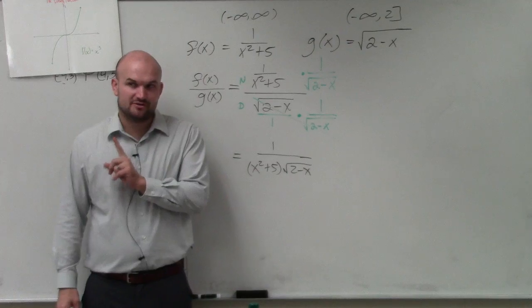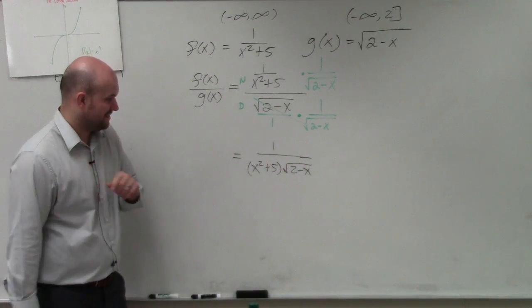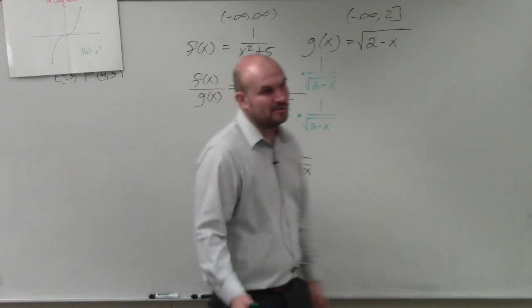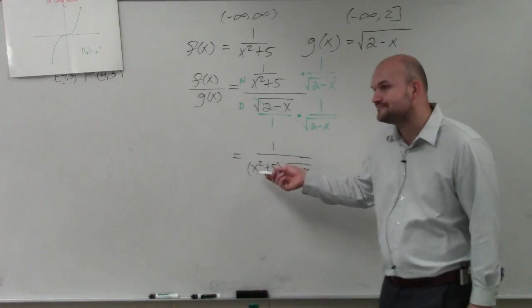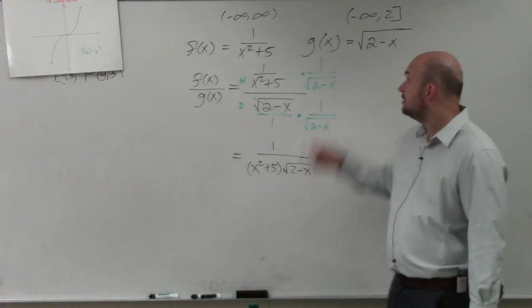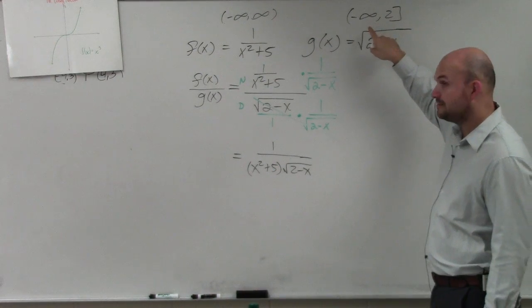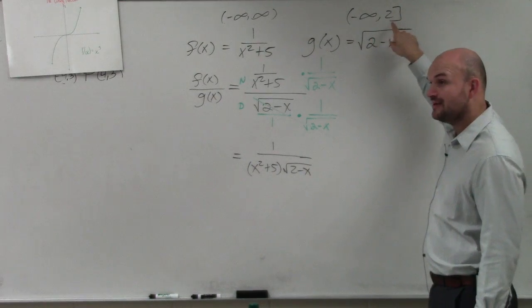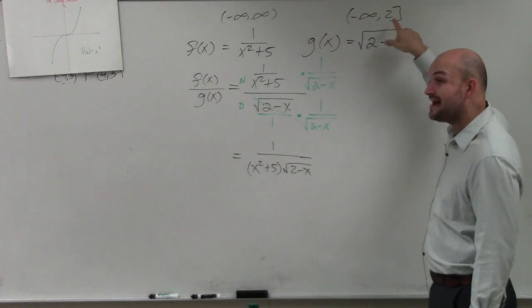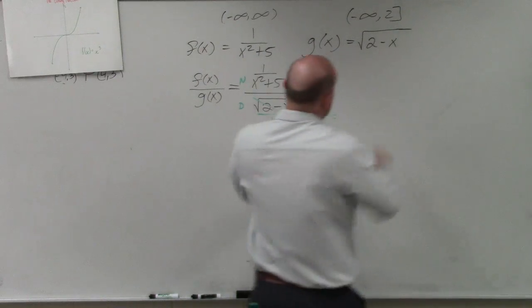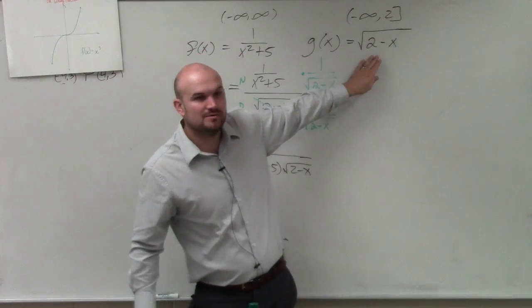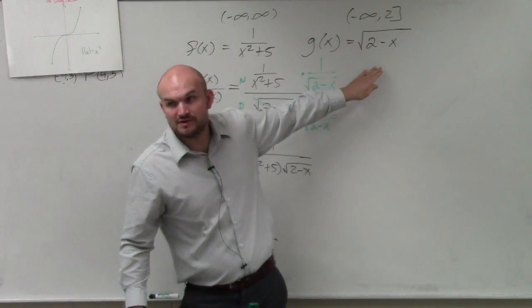However, they did ask us to find the domain. Or I'm asking to find the domain. Now, again, are we concerned about the x squared plus 5? No, that's all real numbers. But this domain is negative infinity to the 2. But it says you can have 2 in there. And why can you have 2 inside this domain? Because what's 2 minus 2? 0. And what's the square root of 0? 0.